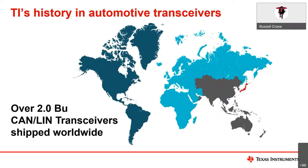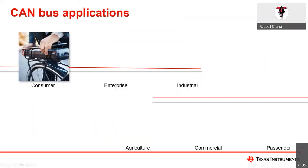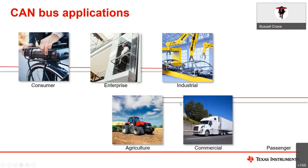TI is not new to this particular market. We've shipped over 2 billion units worldwide for CAN, LIN, and automotive transceivers, and that includes almost every OEM and Tier 1 in the world. All of our devices are fully compliant with the necessary emissions and have the necessary OEM approvals, and that includes these CAN SIC devices that we'll be talking about today.